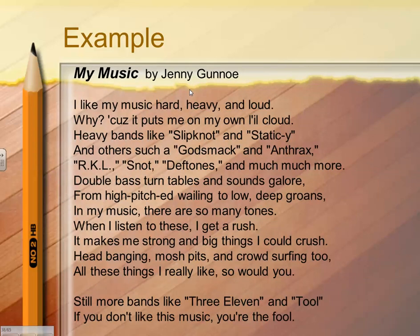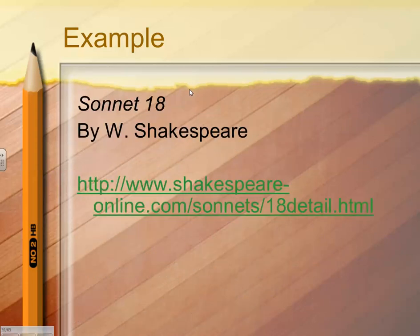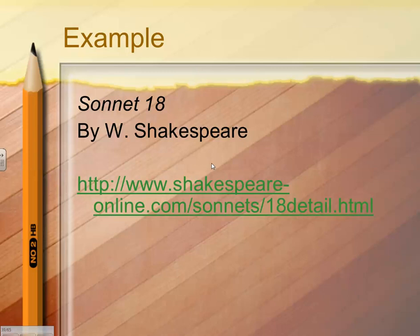The next one is just about this poet's favorite type of music — these are modern examples of sonnets. If you go to SparkNotes or just Google Shakespearean sonnets, SparkNotes is great because you can look at all of Shakespeare's sonnets with side-by-side modern translations. But this is my favorite — one of the greatest love poems of all time — Sonnet 18 by William Shakespeare.